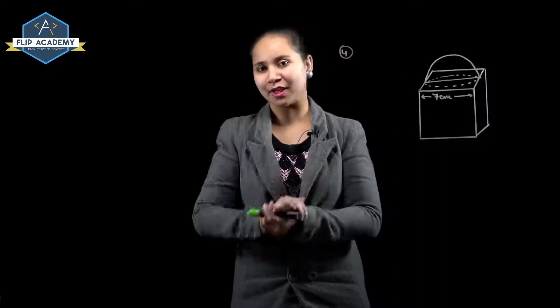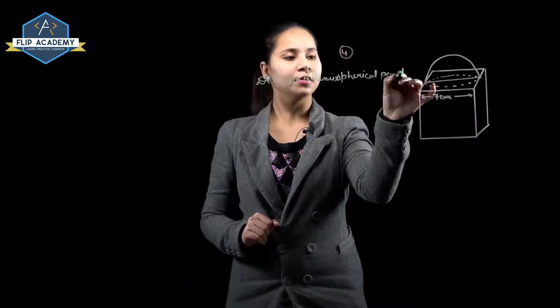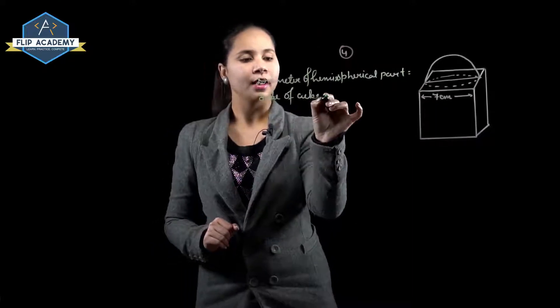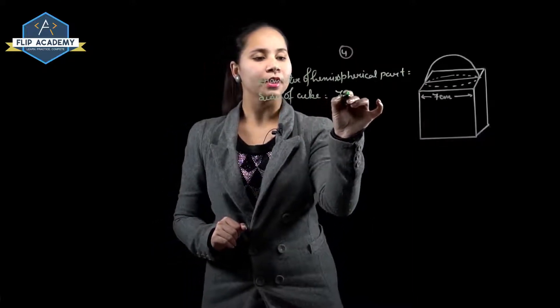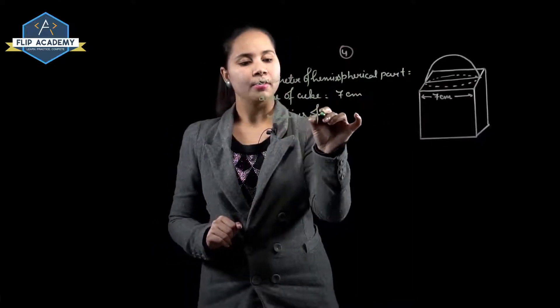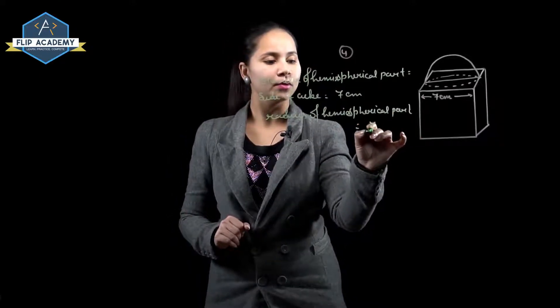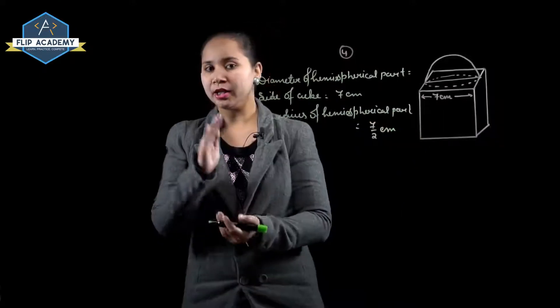From the figure, we can observe that the diameter of the hemispherical portion is equal to the side of the cube, which is 7 centimeters. So the diameter of the hemispherical part equals 7 centimeters, and the radius of the hemispherical part is equal to 7 upon 2 centimeters.